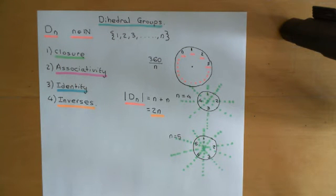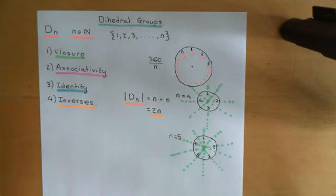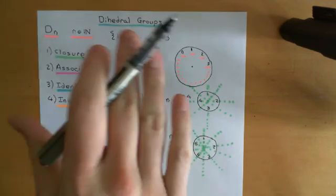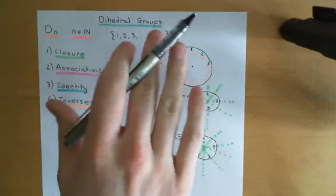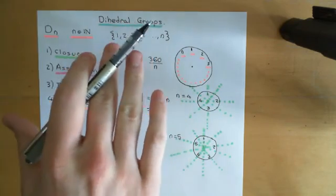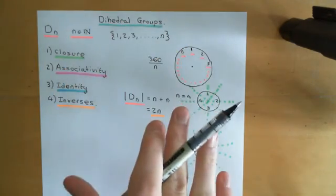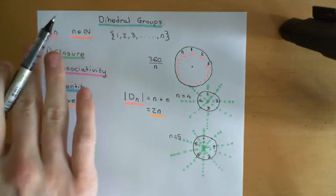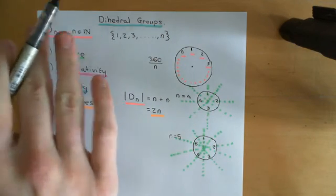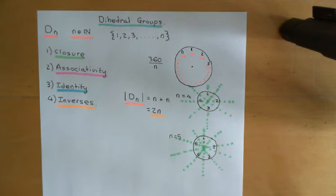The way that you can think of D little n is that you create this set {1, 2, 3, all the way up to little n} — the set of all natural numbers up to and including little n. The group D_n is going to consist of symbols that represent certain set permutations of this set {1, 2, 3, ..., n}.